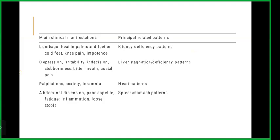If there is lumbago, heat in palms and feet or cold feet, knee pain and impotence, that is a pattern of kidney deficiency. Where there is depression, irritability, indecision, stubbornness, bitter mouth and costal pain, that may be liver stagnation or deficiency patterns.